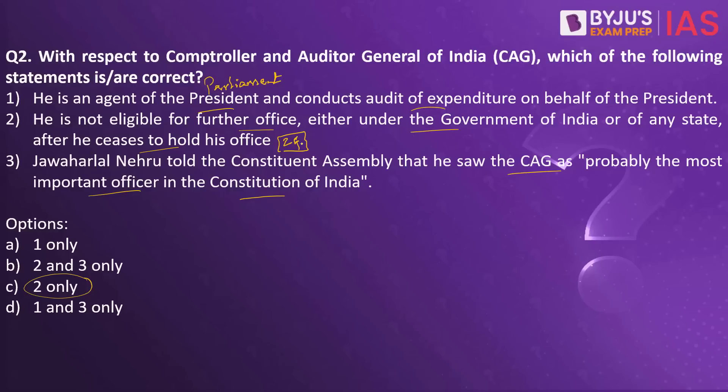The third statement is wrong because it was Dr. B.R. Ambedkar who stated that the CAG is probably the most important officer in the constitution of India — not Jawaharlal Nehru. As an assignment, please put in the comment section: Does the CAG audit municipal institutions? Yes or no? And explain why or why not.